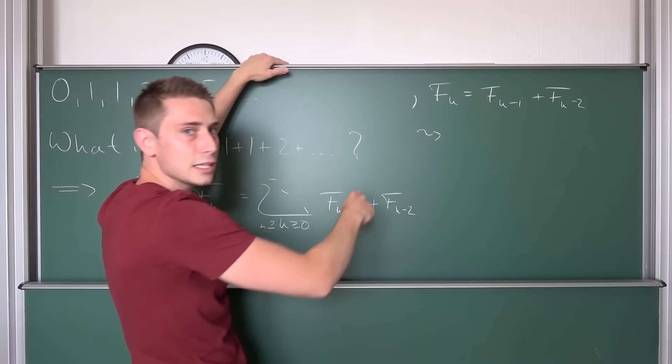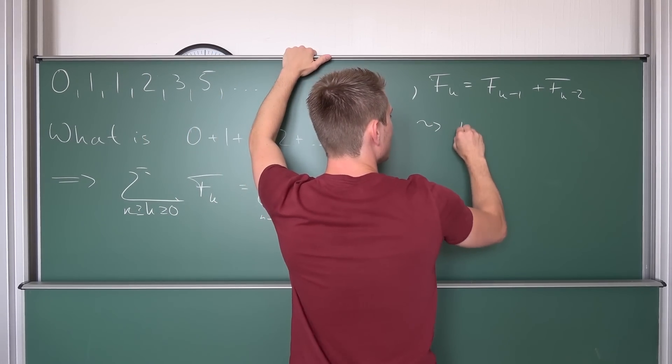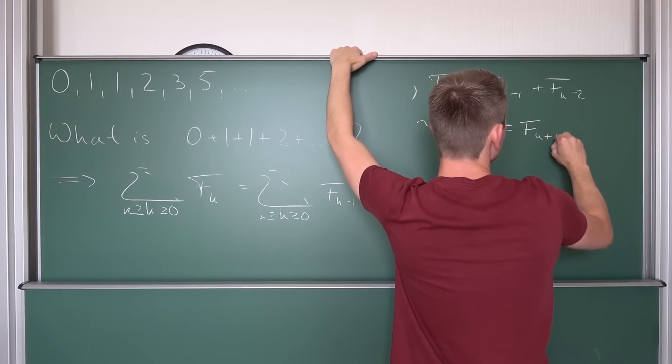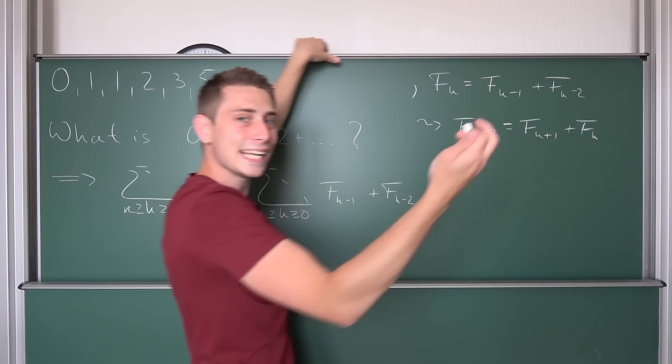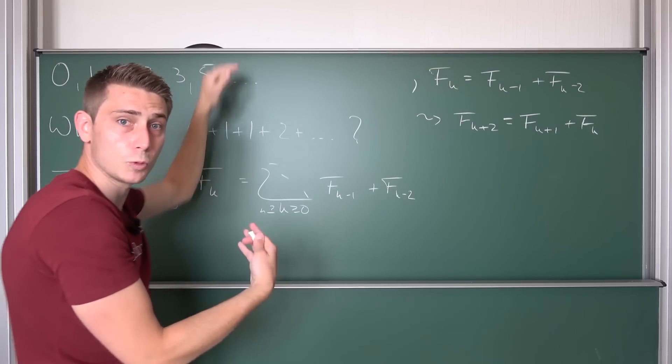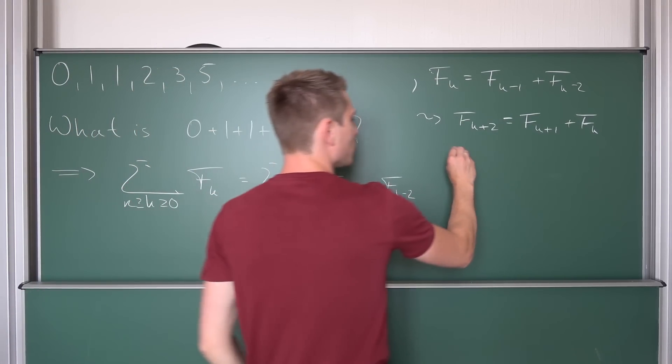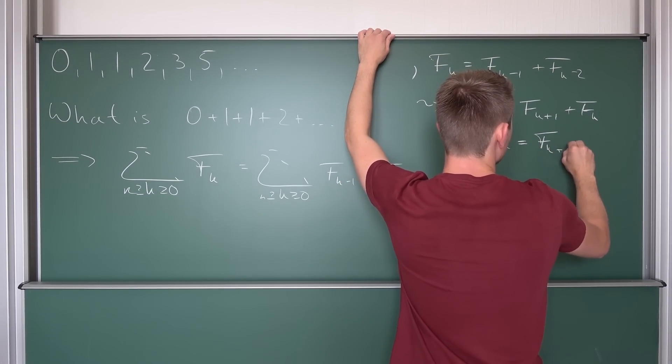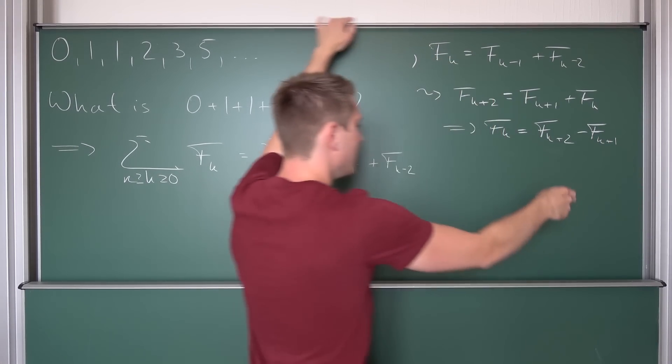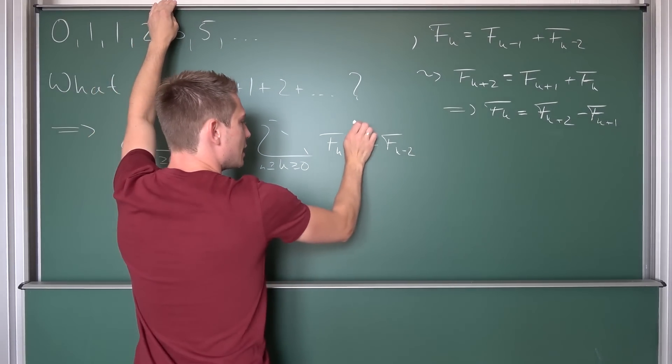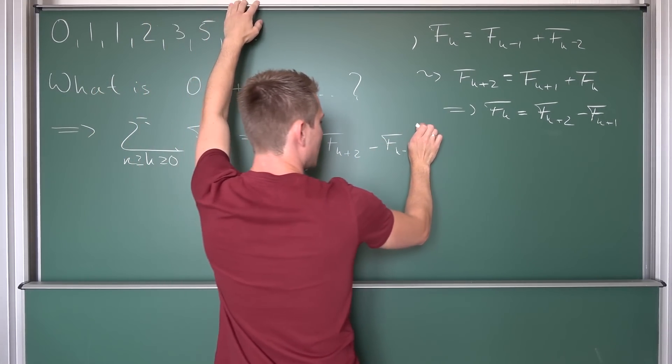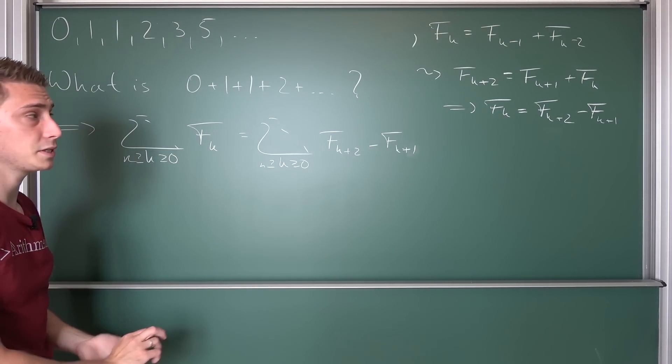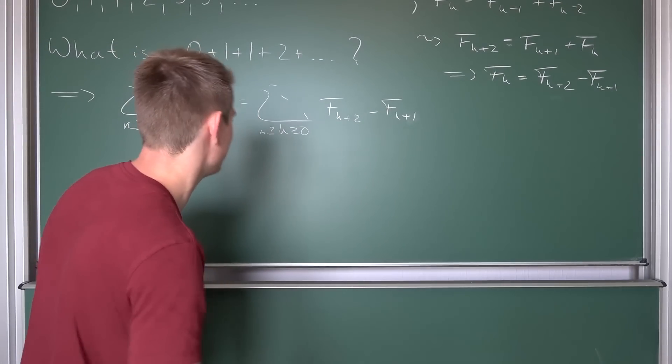Does make kind of sense. We are going to do an index shift from k to k plus 2. Meaning Fk+2 is thus equal to Fk+1 plus Fk. And there we go. This got us rid of this weird problem with the indices. Meaning we are going to solve for Fk. Fk is nothing but Fk+2 minus Fk+1. Now we can plug this into here. So this is Fk+2 minus Fk+1. And this already got rid of the biggest problem here.